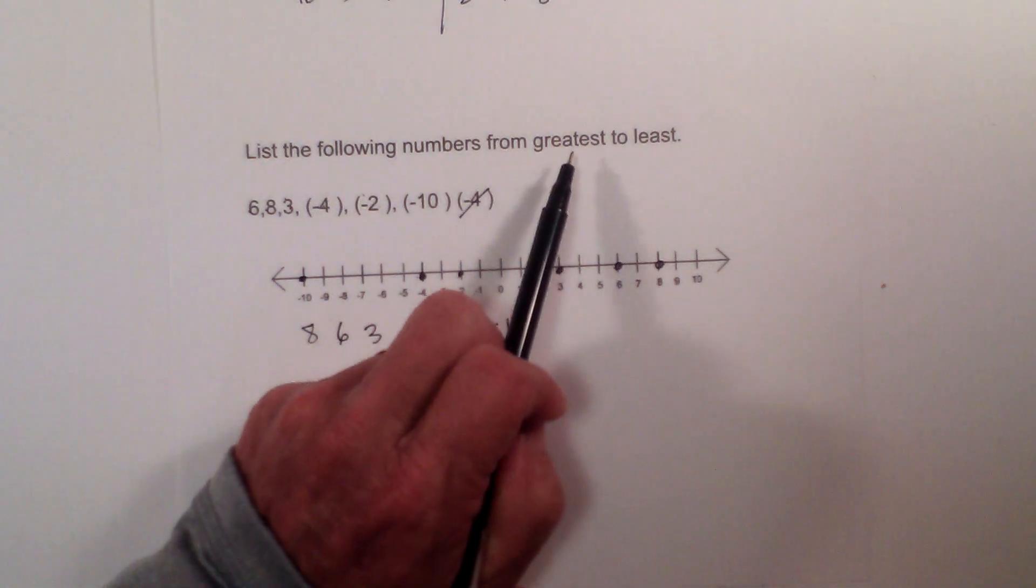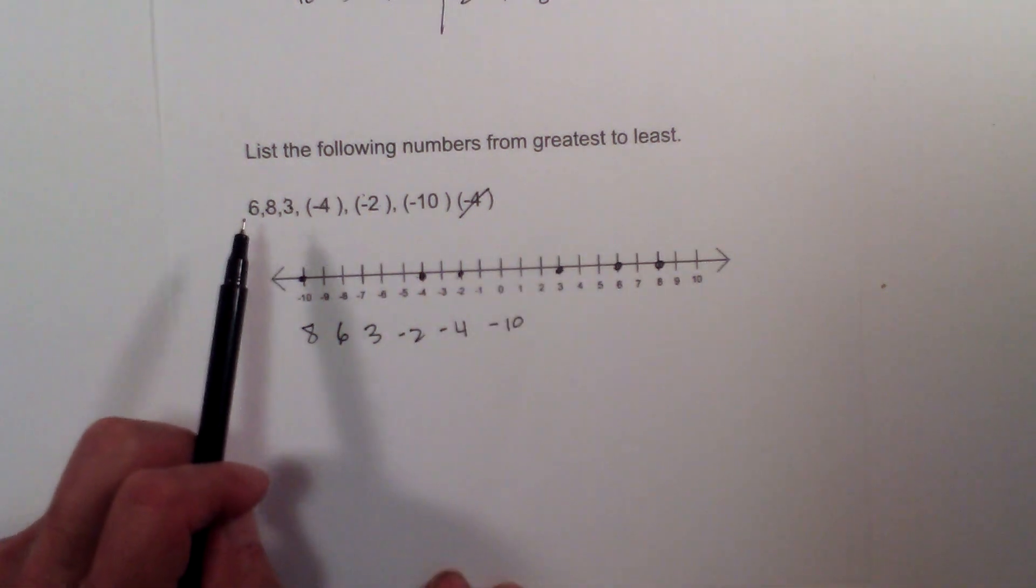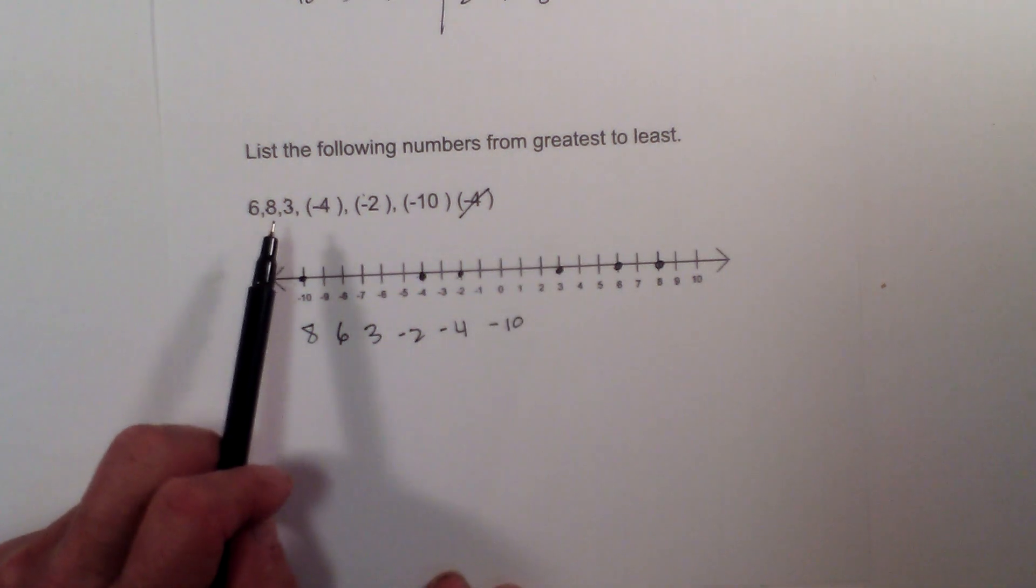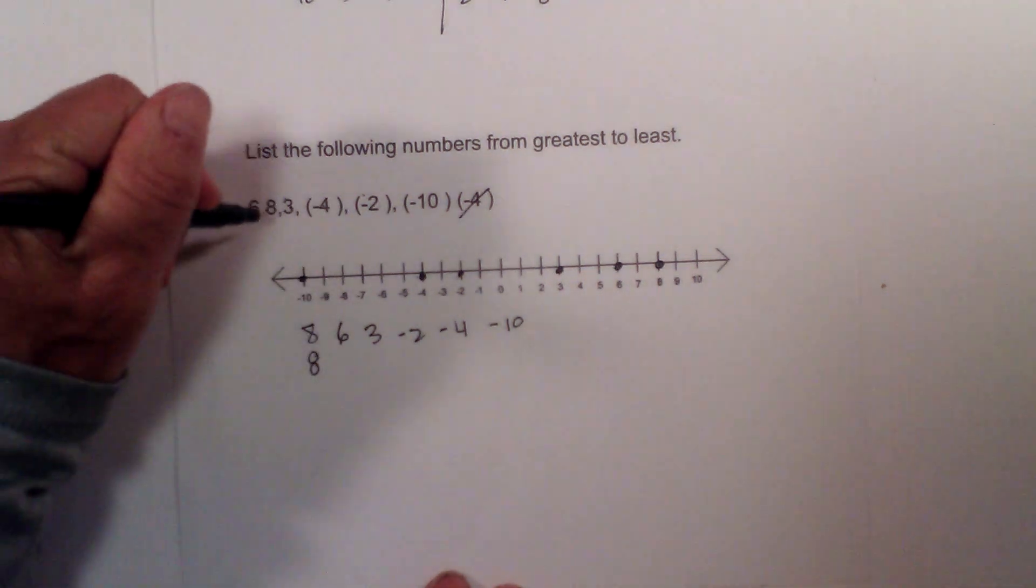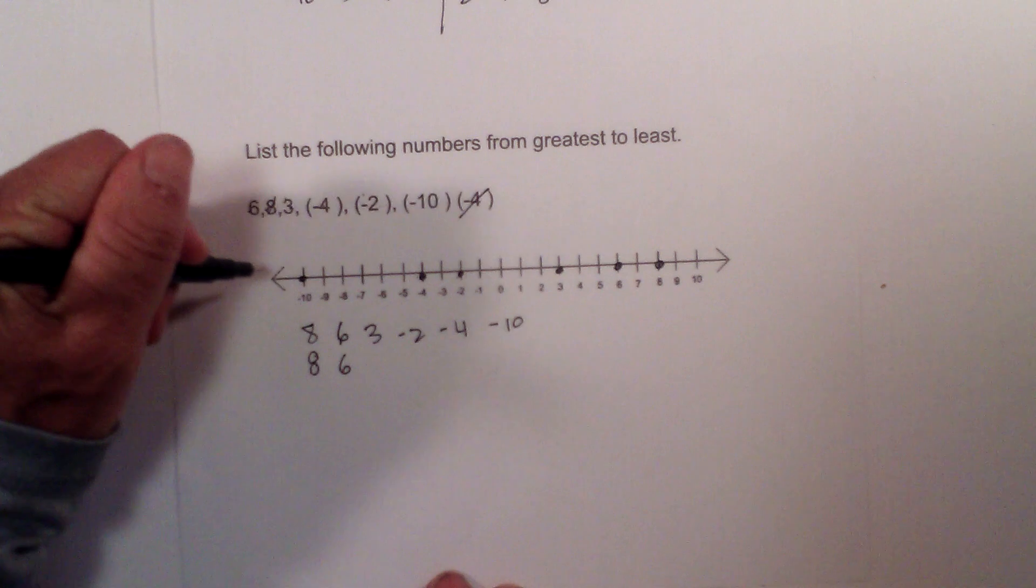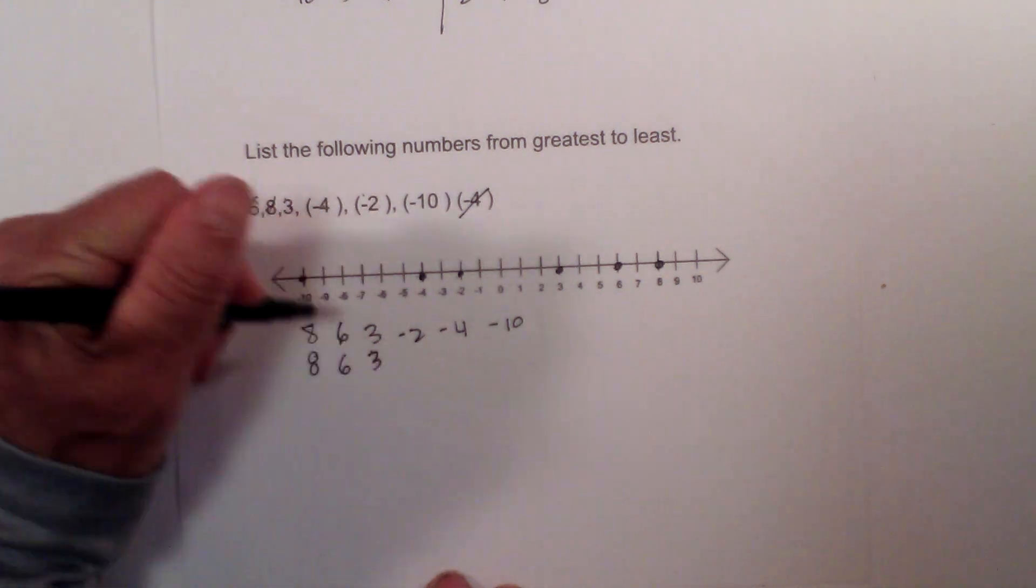And I'll also show you without the number line. If I'm going from greatest to least, I'm going to start with the positive numbers first. And I want the largest positive number, and that is 8. And then the next largest is 6, and the next largest is 3.